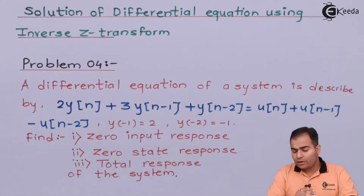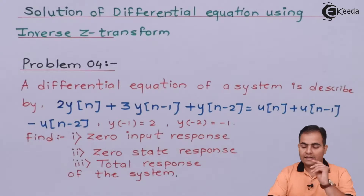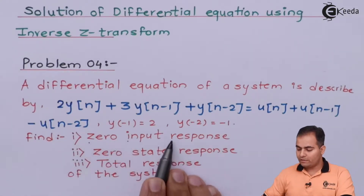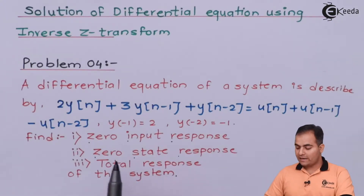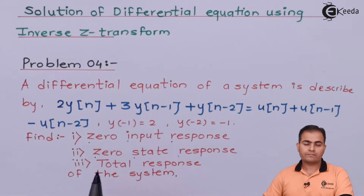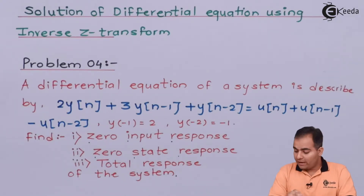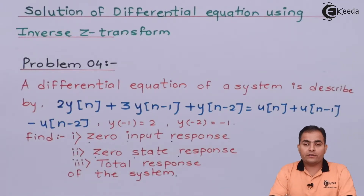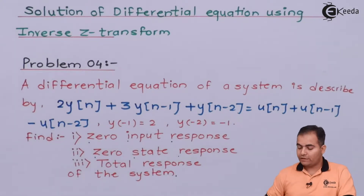First, let's define the terms. The total response is the addition of ZIR (zero input response) and ZSR (zero state response). ZIR is the output of the system obtained only because of the initial energy of the system, not because of the applied input. The zero state response is the output obtained only when input is applied, with initial conditions assumed to be zero.